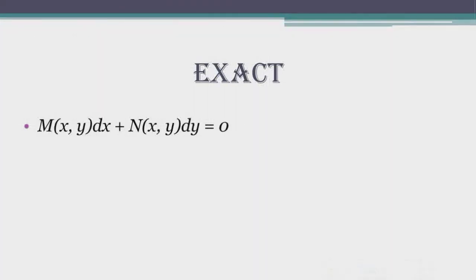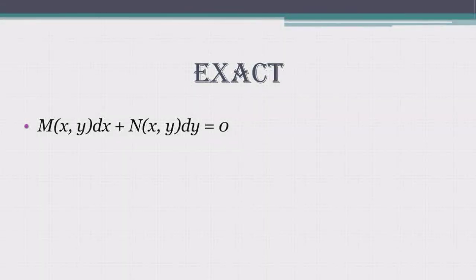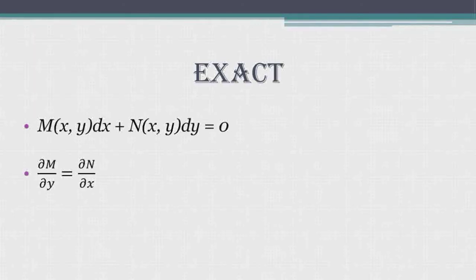The last type is the exact ordinary differential equation. The general form of an exact ODE is M of x and y times dx plus N of x and y times dy equals zero. This differential equation is exact if the partial derivative of M with respect to y equals the partial derivative of N with respect to x.